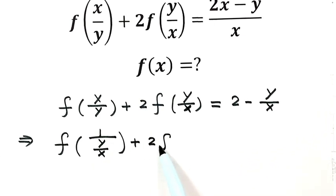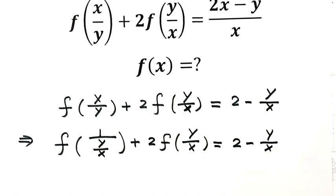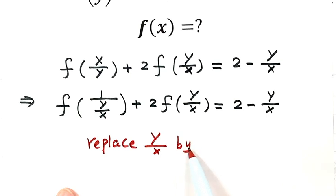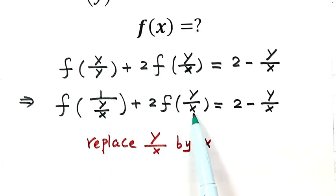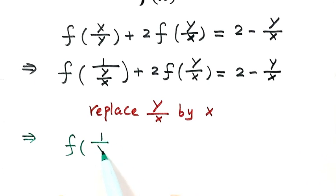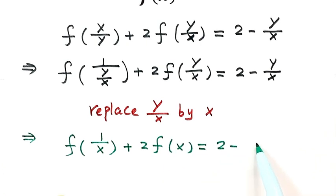Then write down the second term and the right-hand side. Since here we have y over x, we're going to treat y over x as a new variable. So next we're going to replace y over x by another variable — let's use x. So now let's do the substitution. Use x to replace here, here, and here. So then we have: f of 1 over x plus 2 times f of x equals 2 minus x. So let's label this one as equation 1.